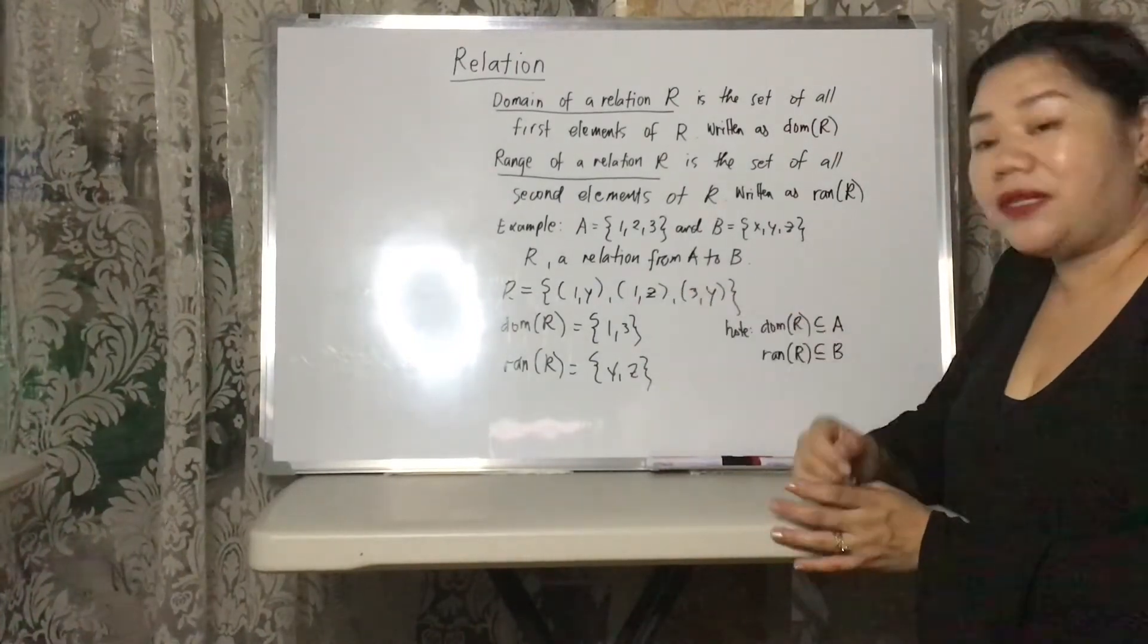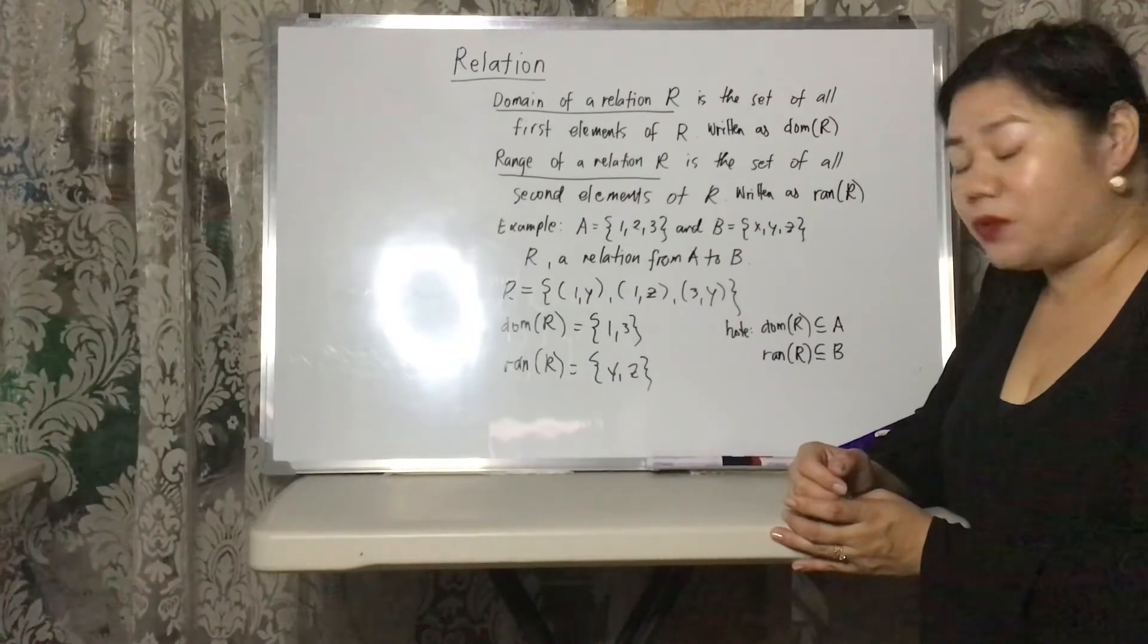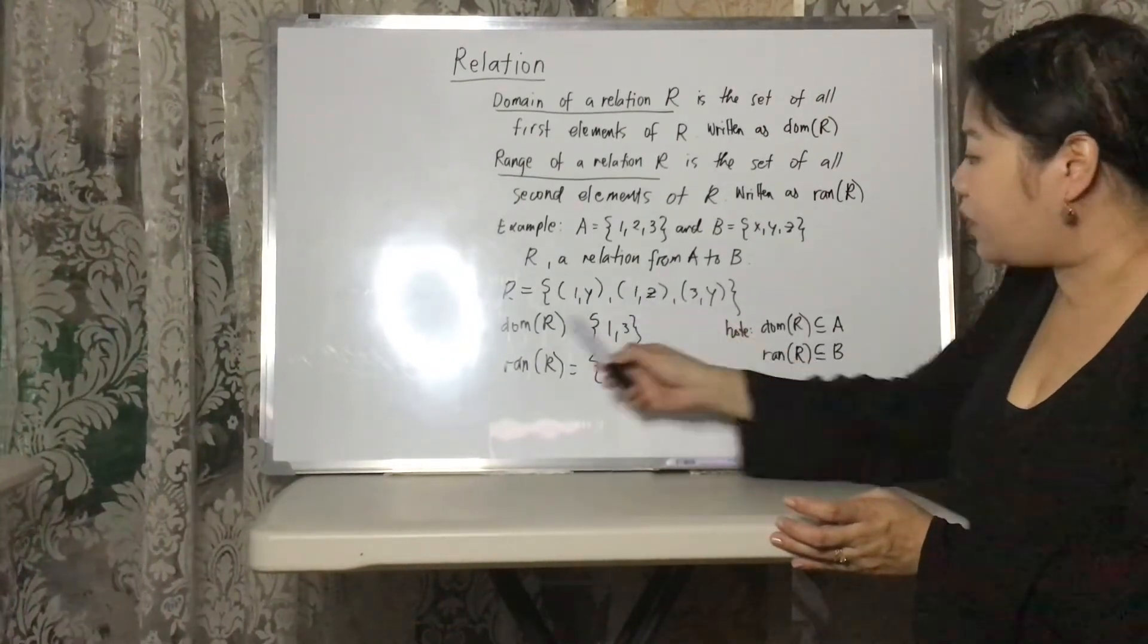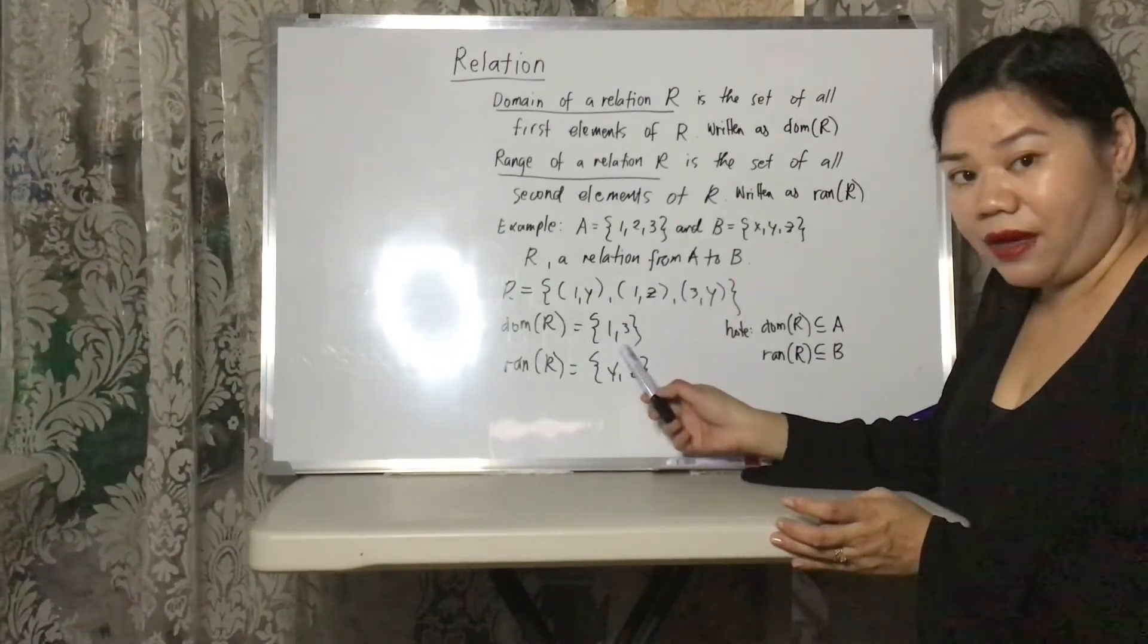So, by just inspecting the elements of R, we look at all the first elements. We can see that it's 1 here, 1, and then 3. So, the domain of R is the set 1, 3. Okay,